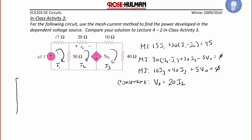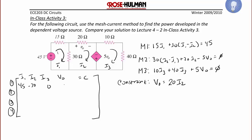So this time our matrix is going to have 4 rows for the 4 equations, and 5 columns: I1, I2, I3, V0, and the constant. Row 1 is 45, negative 30, 0, 0, 45. Row 2 is negative 30, 50, 0, negative 5, 0. Row 3 is 0, 0, 50, 5, 0. And row 4 is 0, negative 20, 0, 1, 0.